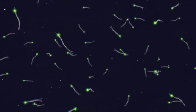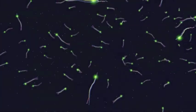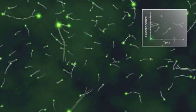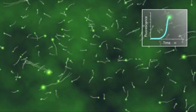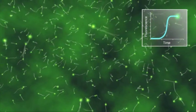As more amplicon is generated, more torches bind, and a progressively higher fluorescence signal is generated. The time taken for the fluorescence signal to reach a threshold is inversely proportional to the starting pathogen concentration.